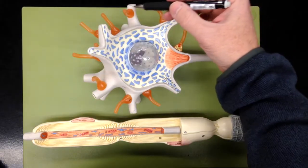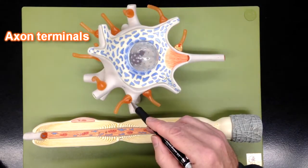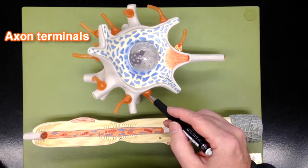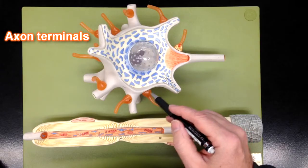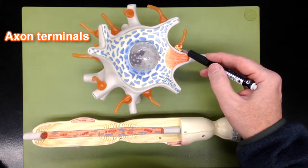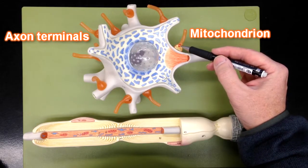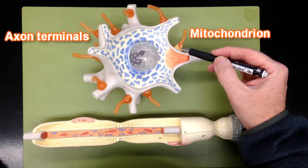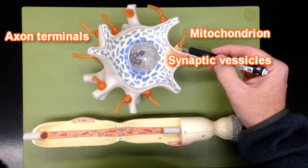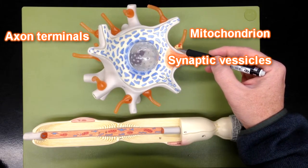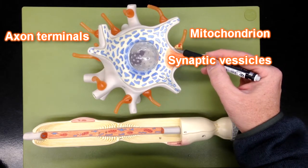These little orange things are axon terminals that connect or synapse with the dendrites, cell body, or even the axon. This axon terminal has been cut open so you can see a mitochondrion and all these synaptic vesicles. These synaptic vesicles hold the neurotransmitters that get released into the synapse and bind to receptors on the post-synaptic cell membrane.